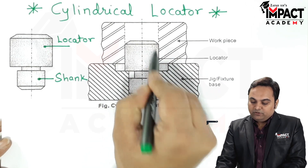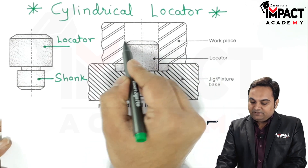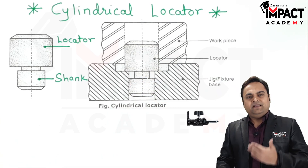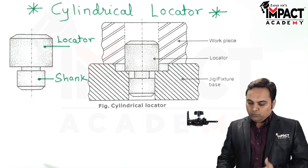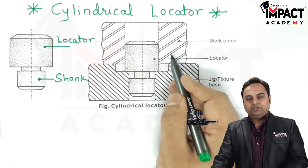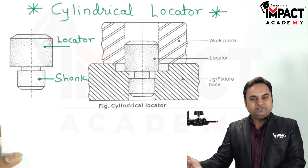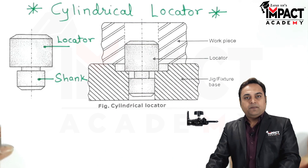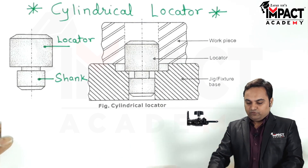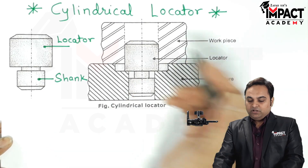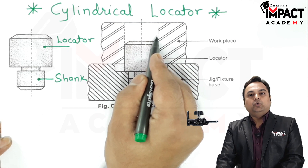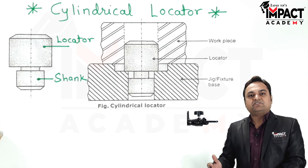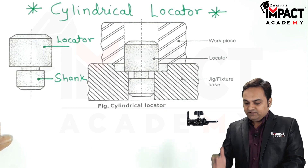The locator has a chamfer on the top, and with the help of this chamfer we can easily load or unload the workpiece, as shown in this diagram where a workpiece is mounted. There is one condition for such cylindrical locators: the workpiece must be hollow, or in other words there should be a previously drilled hole in the workpiece.